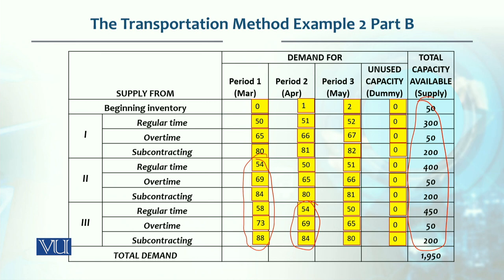To meet the first period's demand, the lowest cost option is 50 units from beginning inventory at zero dollars — that is the lowest cost option we have. So we use that first. Then the next lowest is $50 regular time, with a capacity of 300 units. We've used those 300 units.